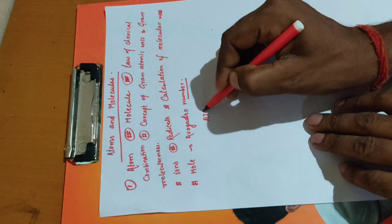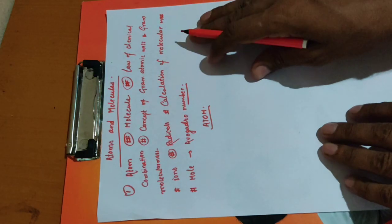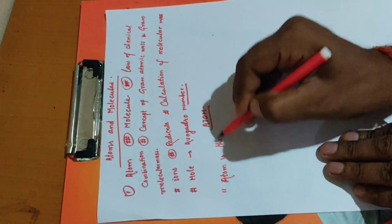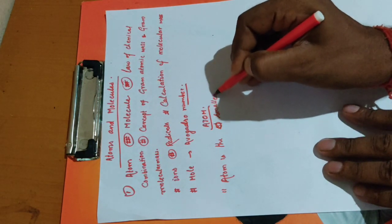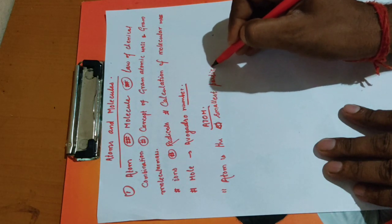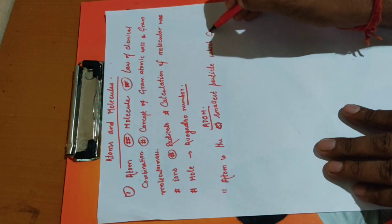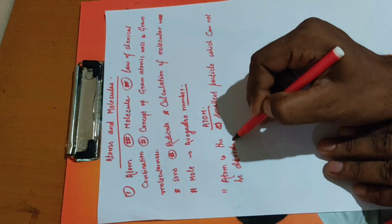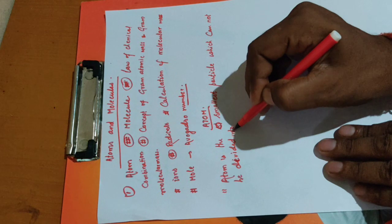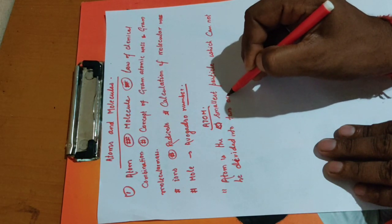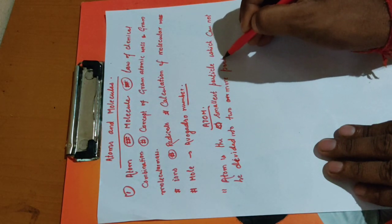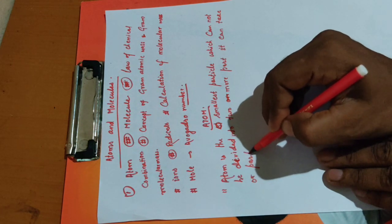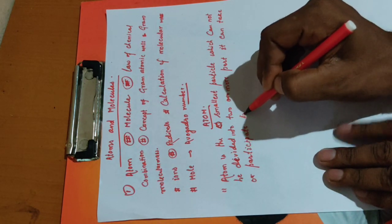So let's start with atom. Atom is the smallest particle which cannot be divided into two or more parts, but it can take part and participate in a chemical reaction.